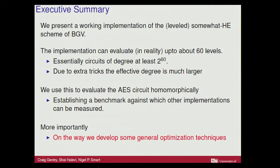The executive summary is: we are going to be working with a leveled version of the BGV somewhat homomorphic encryption scheme. We're going to evaluate this up to about 60 levels, which means we can evaluate functions of degree up to 2 to the 60. So imagine a polynomial of degree up to 2 to the 60 - we can go higher with some tricks - and we can evaluate that function. We can evaluate AES, so let's evaluate AES.